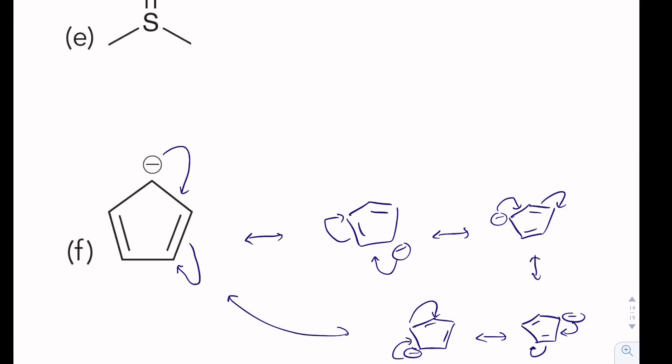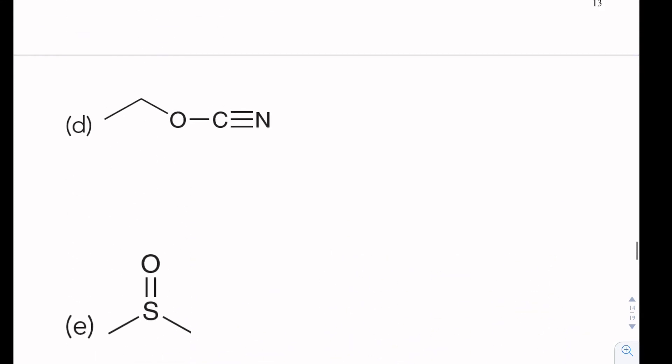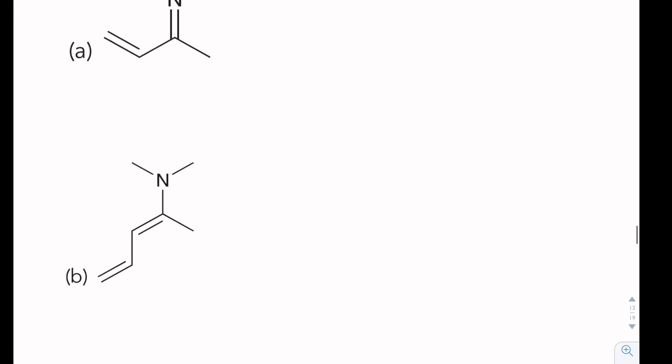And then that would circle back to where we started. And those were some messy arrows, so I apologize. In B here, we're neutral, so we've got to draw in those delocalized lone pairs of electrons. And we just create a double bond and kick out the adjacent double bond. And we can do that again. So that's what's important to recognize about negative charges and delocalized electrons.